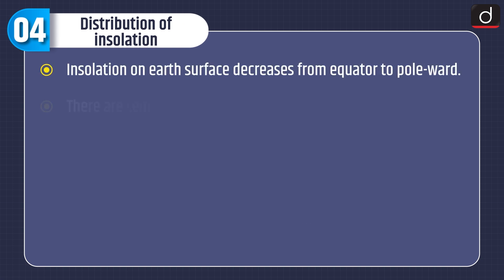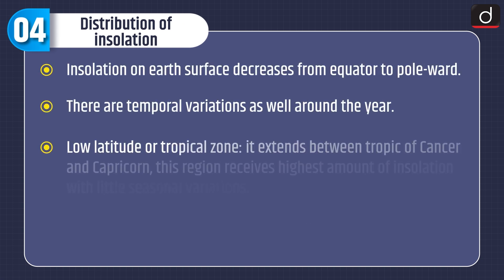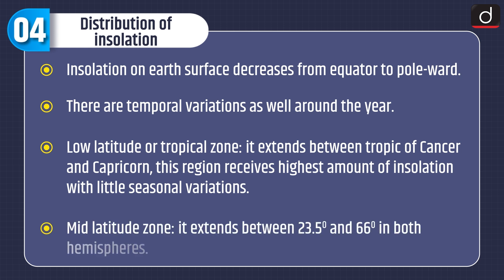Insolation on the earth's surface decreases from the equator toward the poles, and there are temporal variations around the year. In the low latitude or tropical zone, which extends between the Tropic of Cancer and the Tropic of Capricorn, this region receives the highest amount of insolation with little seasonal variation.